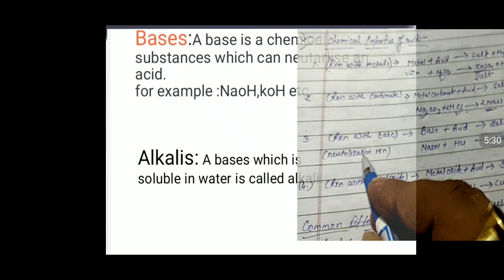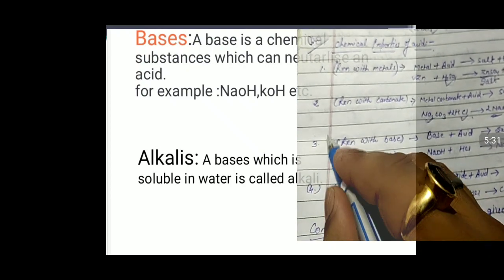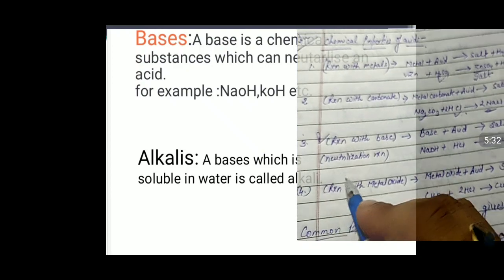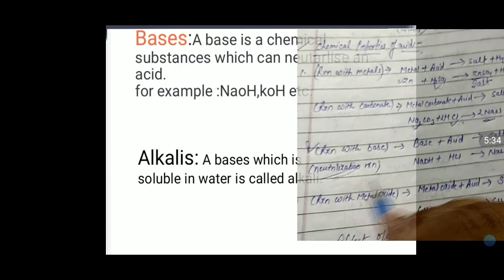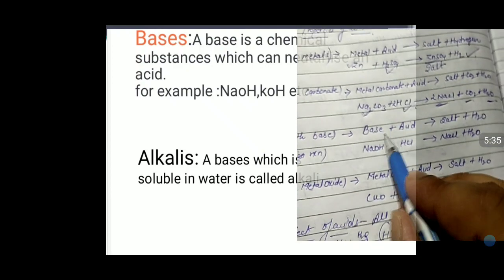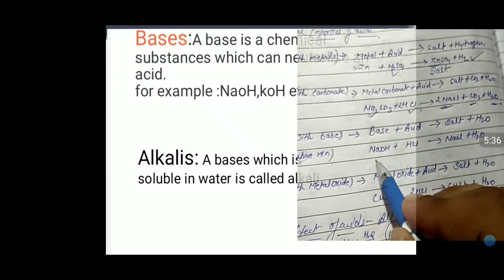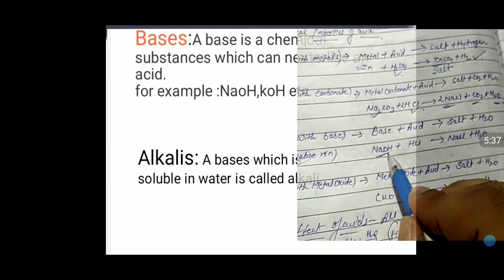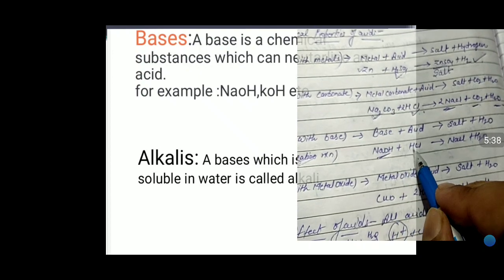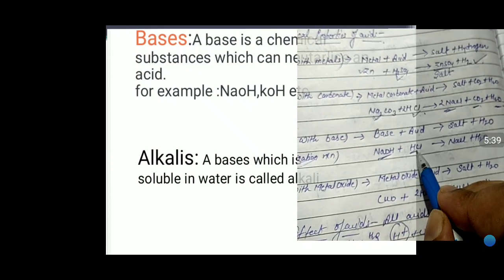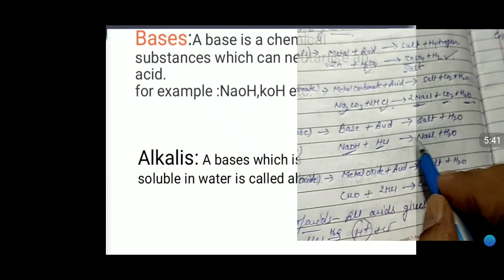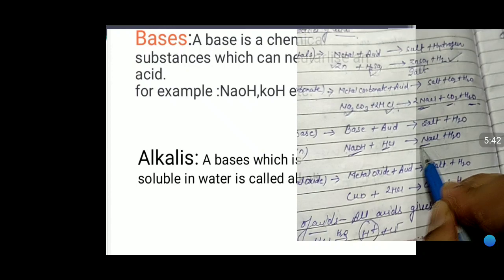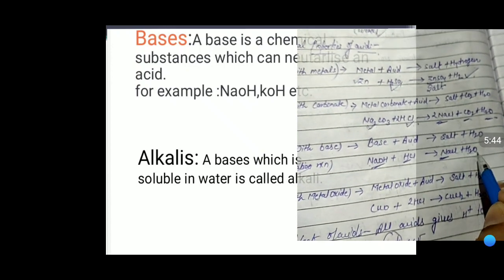Third chemical property of acid: reaction with base. This is also called the neutralization reaction. When acid reacts with base — for example, NaOH (base) with HCl (acid) — it forms salt (NaCl) and water.